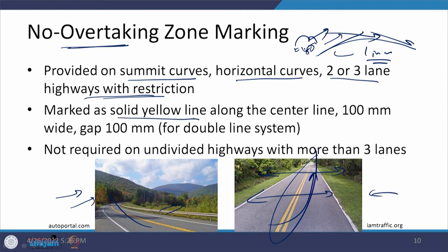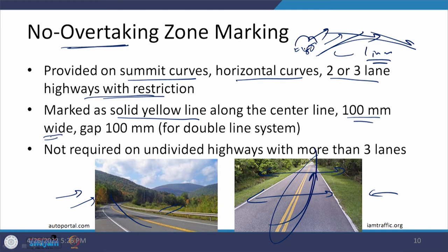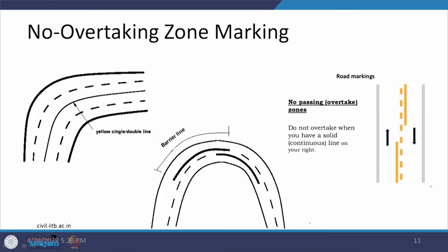The solid yellow line is placed along the center line of the carriageway. It is 100 mm wide for a single line; for a 2-lane system with double lines, each is 100 mm with a 100 mm gap — totaling 300 mm. For highways with more than 3 lanes, overtaking issues are generally not present and no overtaking zone markings are not provided. On a horizontal curve, the line can be a single or double continuous yellow line.